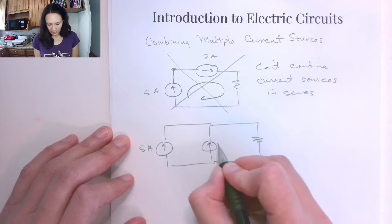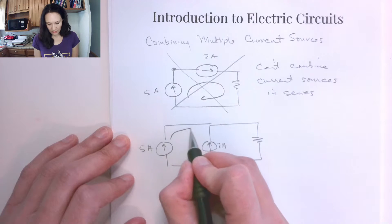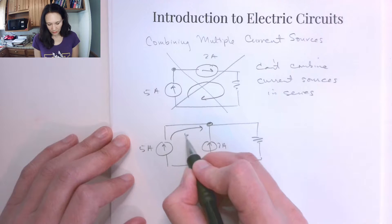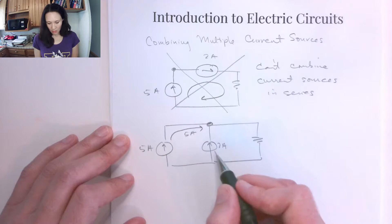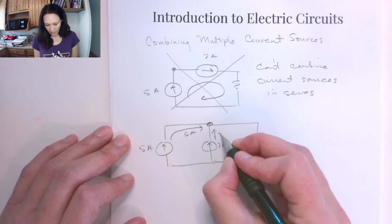If this is 5 amps and this is 2 amps, we would have 5 amps of current coming up this branch and meeting this node. So 5 amps comes up here. From this source, we have 2 amps that comes up here.